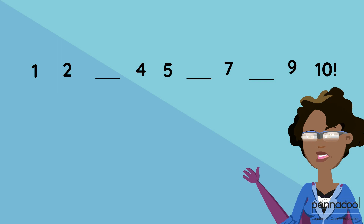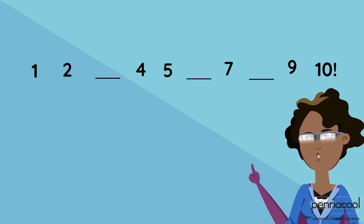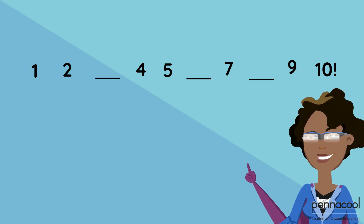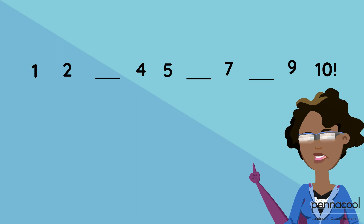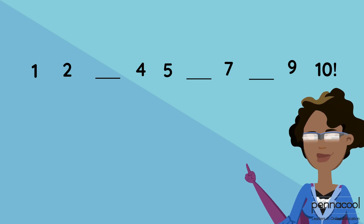So you can see there are various numbers between 1 and 10. But are all the numbers between 1 and 10 shown on the screen? Let's fill out the sequence correctly. The missing numbers were 3, 6, and 8.